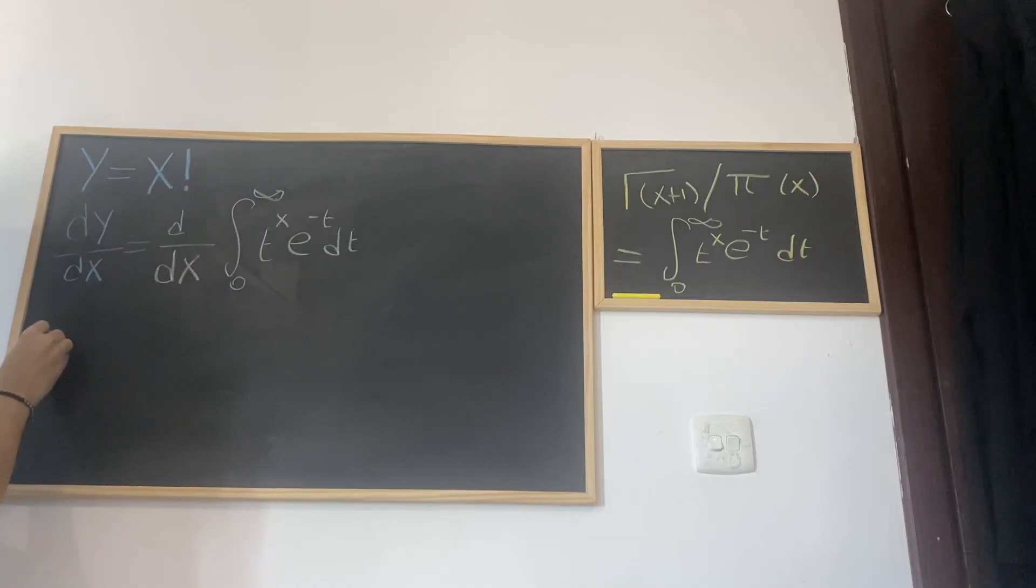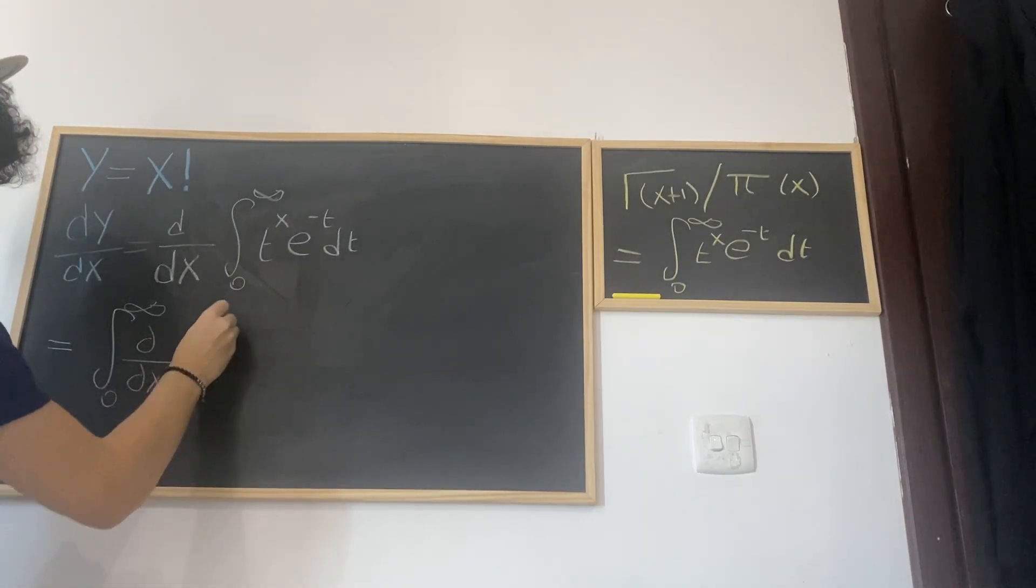So just write that this is equal to the integral from 0 to infinity of the partial differentiation of t^x multiplied by e^(-t) dt.